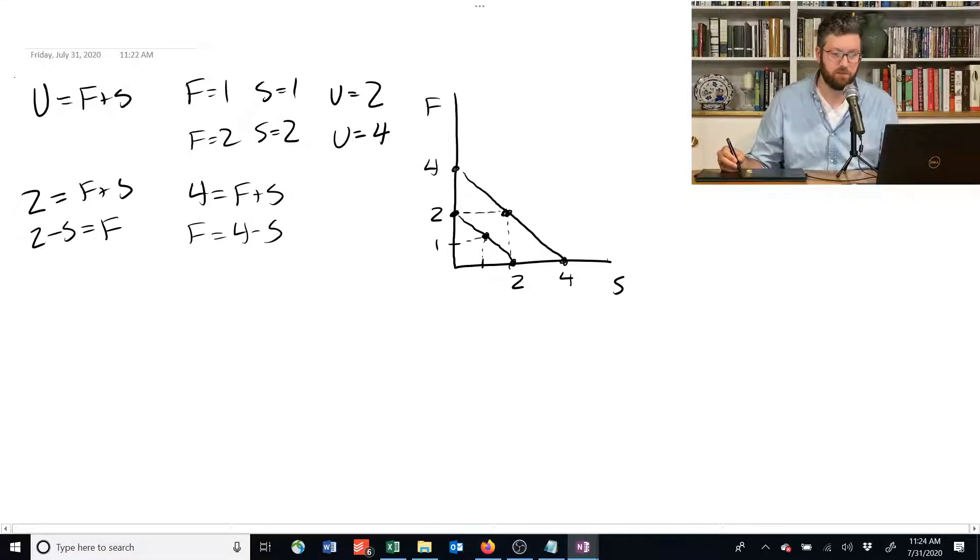Having 4 food and 0 shelter, 2 of each, or 4 shelter and 0 food will give you utility of 4. And this one down here gives you utility of 2. So we've drawn all our indifference curves.